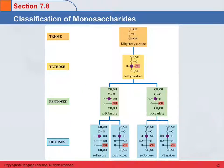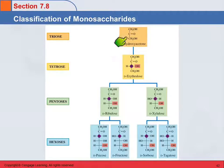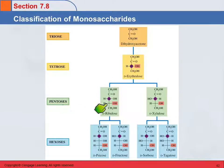These are the ketoses. There are not as many enantiomers because the smallest ketose, the triose dihydroxyacetone, does not have a chiral center. The tetrose is the first ketose with a chiral center. For the pentoses there are only two different ones, each with an L version. And for the hexoses, there are just not as many as with the aldoses.